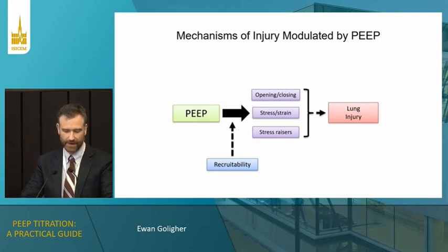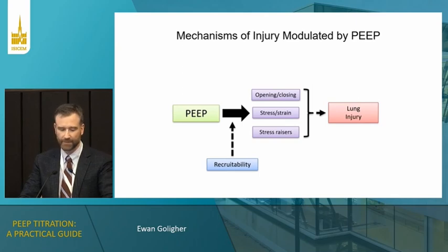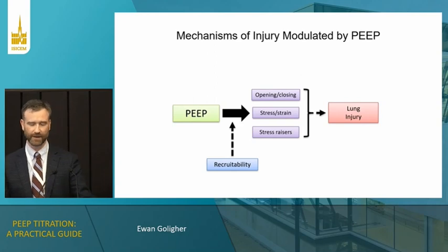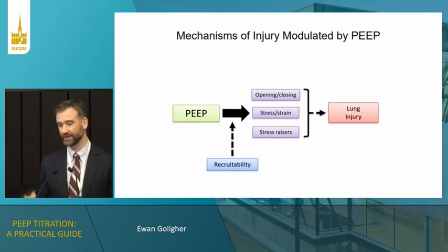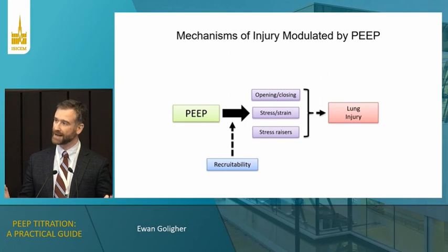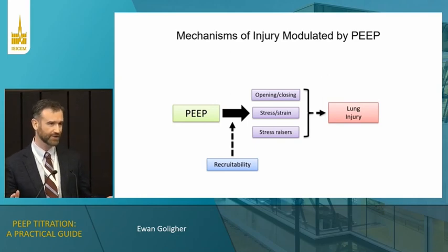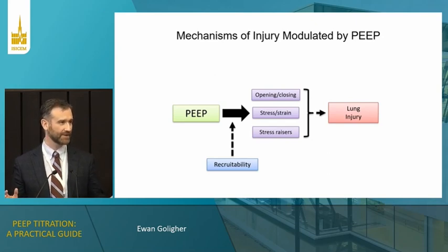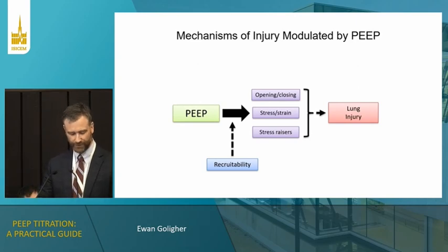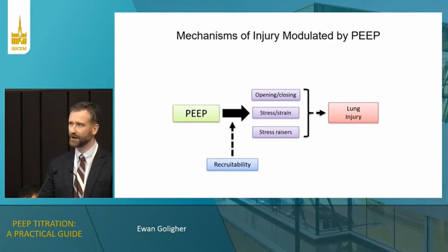The second mechanism — and I'm going to focus on this mostly because I'm personally convinced it's the most relevant — is minimizing stress and strain in the injured lung. Essentially, by maximizing the number of lung units available for ventilation, we can minimize the stress each individual unit experiences during tidal inflation, thereby reducing the risk of lung injury. Then there's the theoretical concept of stress raisers.